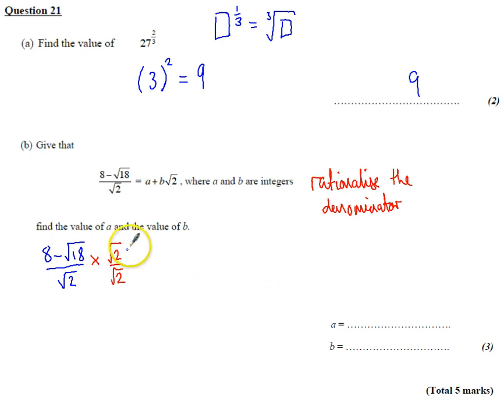Then the denominator becomes root 2 times root 2, which is just 2. And I multiply both numerator terms by root 2, so I get 8 root 2 minus root 36, because root 2 times root 18 is root 36.